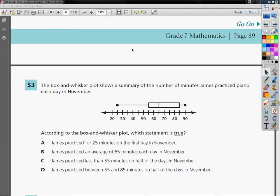The box and whisker plot shows a summary of the number of minutes James practiced piano each day in November. According to the box and whisker plot, which statement is true? A says, and we have to use the multiple choice questions here, or answer choices here, because otherwise, how would you answer the question?